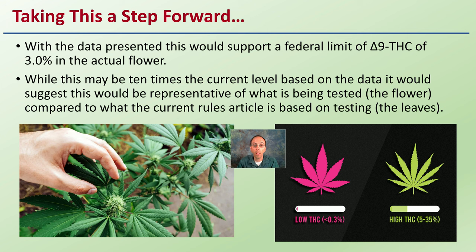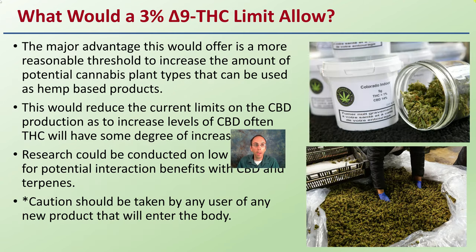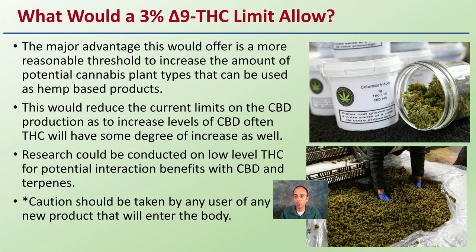If we were to take the original article that was testing the leaves and set that 0.3% level with the flower typically being ten times greater, three percent would be the actual flower concentration. The major advantage this would offer is a more reasonable threshold to increase the amount of potential cannabis types that can be used in hemp-based production. The 0.3% THC level really limits the gene pool that many growers have access to. This would also reduce current limits on CBD production, as increasing levels of CBD often means some degree of THC increase in the plant as well, and research could be conducted on low-level THC for potential interaction benefits with CBD and terpenes.